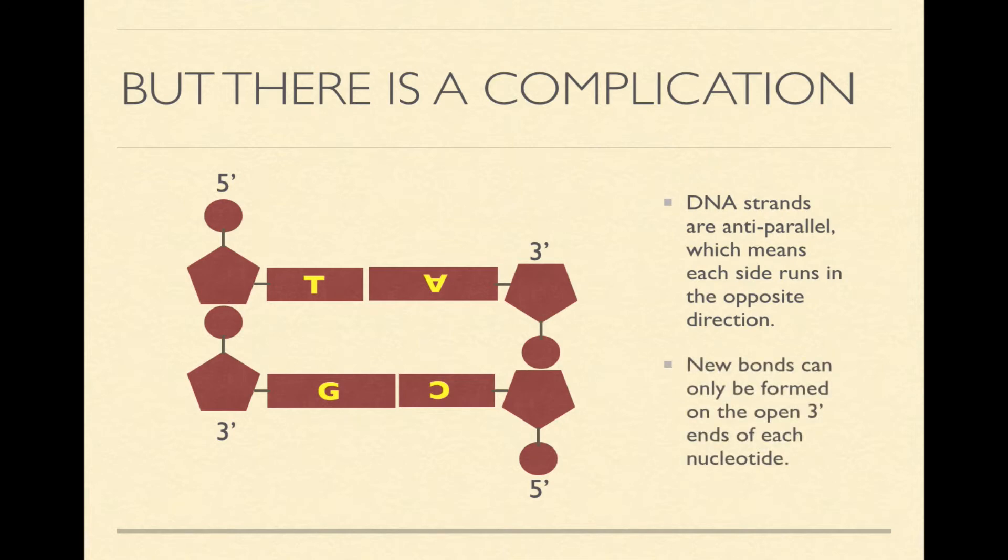And remember, new bonds can only be formed on the open 3' ends of each nucleotide. So if we want to make each of the strands longer, you can only build this way on this side and this way on this side. You can't build here and you can't build here, because remember the phosphate groups can't form a dehydration synthesis with another free nucleotide.